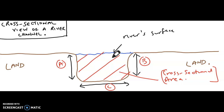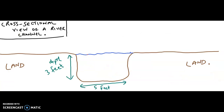The hydraulic radius is a very significant calculation, a very significant tool in terms of understanding the efficiency of a river. Let us do another example. Assuming this particular channel, both the right as well as the left side is the same depth, the cross-sectional area is equal to depth multiplied by width.